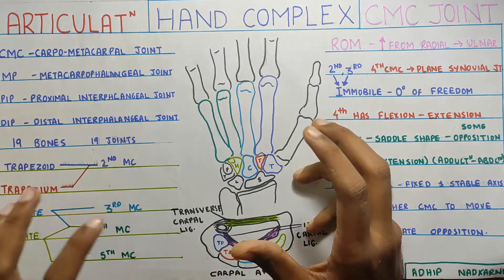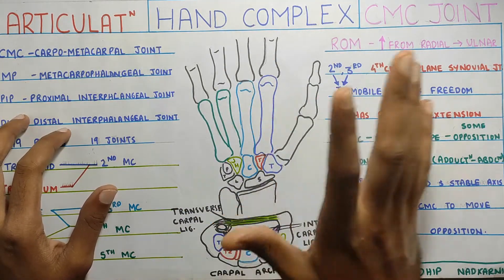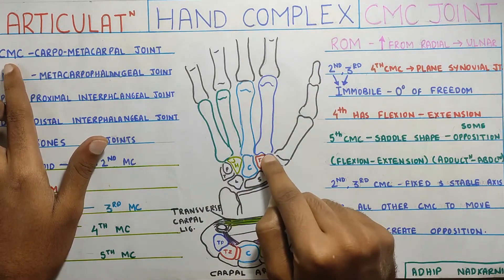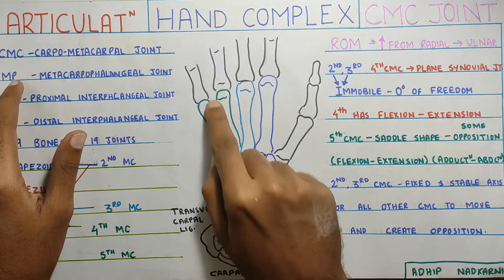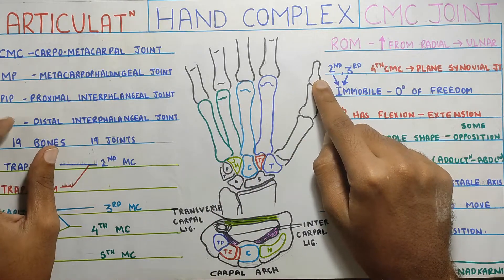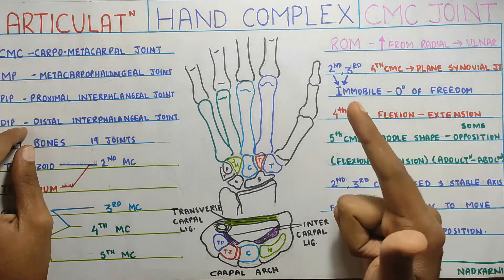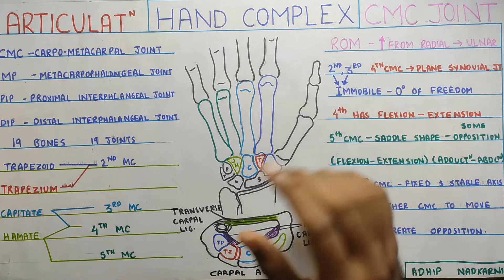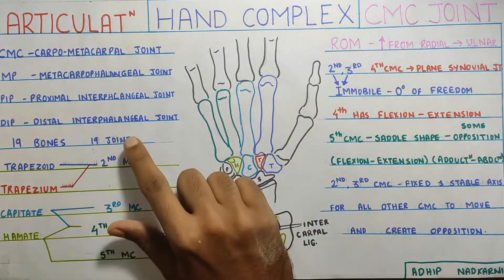Starting with articulation, there are different joints present in the hand overall. There is the CMC joint, that is the carpo-metacarpal. There is the metacarpophalangeal joints, and then distally we have the PIP and DIP — that is proximal interphalangeal joints and distal interphalangeal joints. These are the joints present in the hand. There are a total of 19 bones and 19 joints.